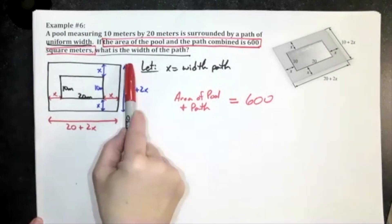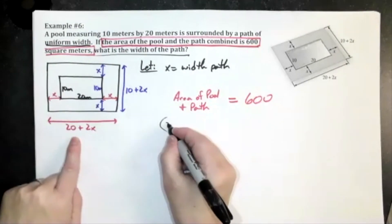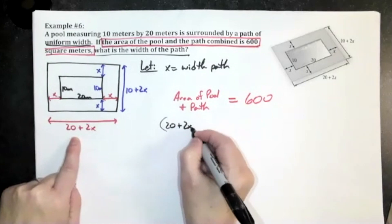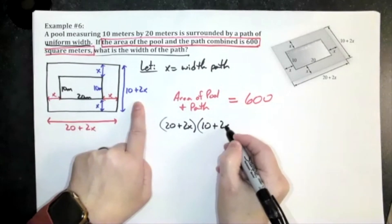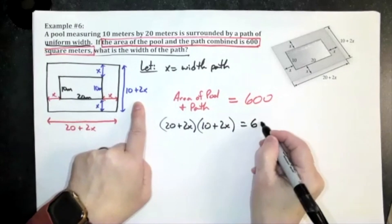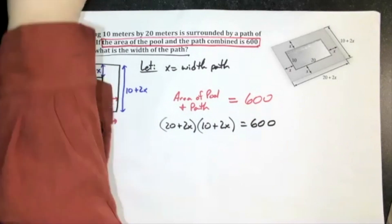So it's basically going to be 20 plus 2x times 10 plus 2x, and that's going to equal 600 because they gave me the 600 in the story problem.